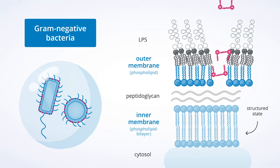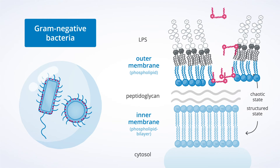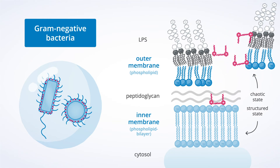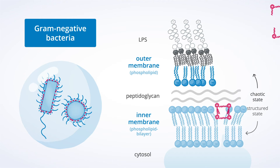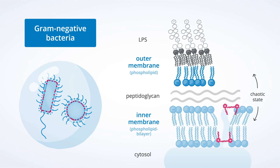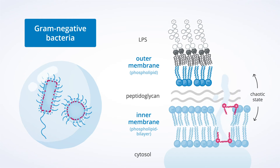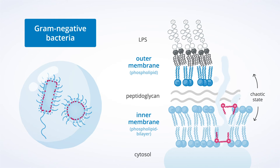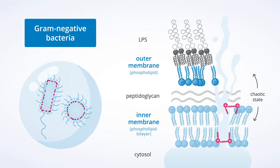Consequently, additional Octenidin molecules can penetrate the inner membrane from the outside and create a chaotic state in an analog manner. Within a very short time, the bacterium gets lysed.